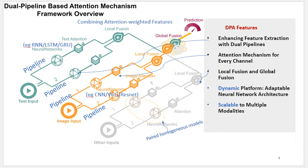We also use a different attention mechanism for images. Our DPA converges in harmony: first through local fusion, where it combines attention-weighted features together, and then moving on to global fusion, where it captures more intricate insights from each modality and forms a more comprehensive picture for prediction. Flexibility is built into our framework — it adapts to different neural networks. Scalability allows us to accommodate additional modalities by simply adding them to the framework, just like puzzle pieces.